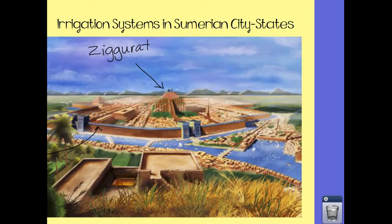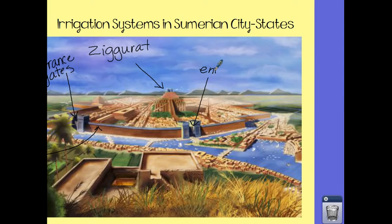Next, there are two of these — this one and this one. What are those? Yes, entrance gates. And when were they open? During the day — yes, they were open during the day for trade. And what did they do to them at night? Close them. Why? They closed them for protection at night.